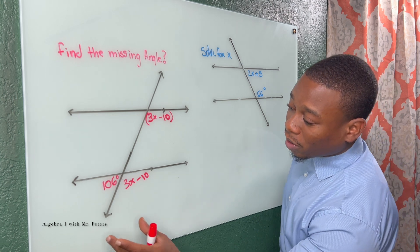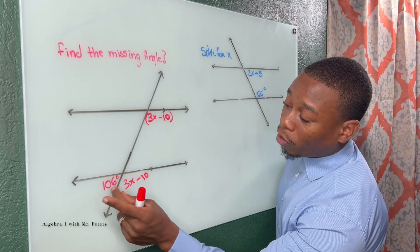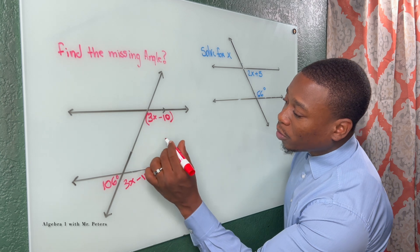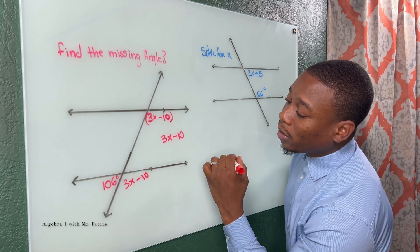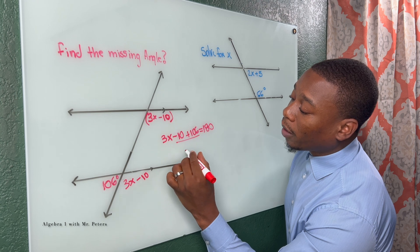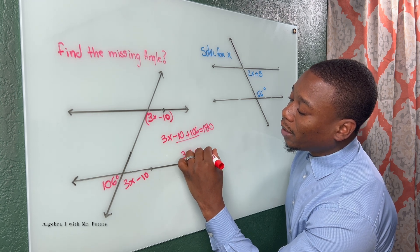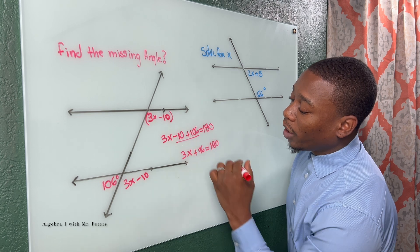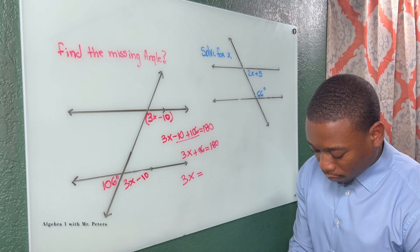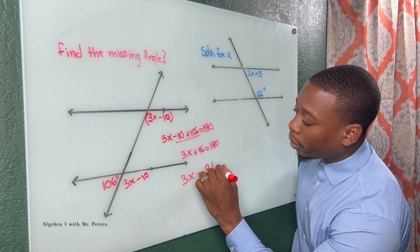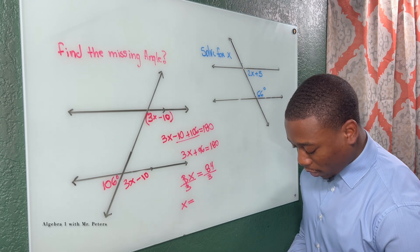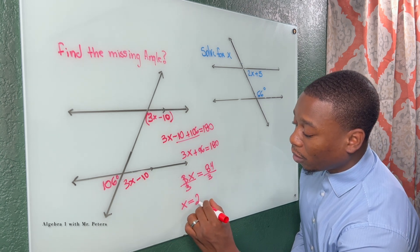Now when I pay attention to this angle pair, these two angles they form a straight line. So I know they're supplementary meaning they equal 180 degrees. So if I want to solve for x I could create an equation as 3x minus 10 plus 106 is equal to 180. Simplify like terms, 3x plus 96 is equal to 180. After I subtract 96 on both sides, I get 84 and then to figure out what x is I divide by 3 and I get x is equal to 28.